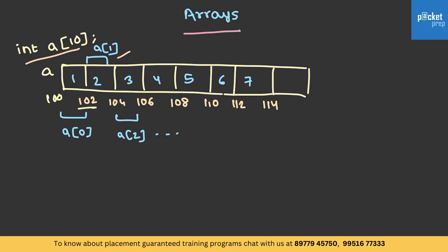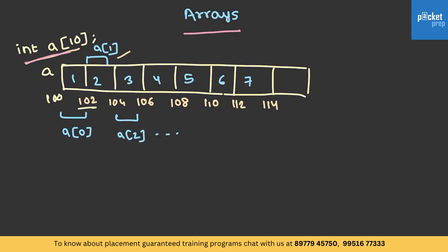Let's take an array for example. I have declared an integer array of size 10. We know that array indexing starts from 0, 1, 2 and so on. If I want to access a specific element — for example this one — it can be accessed with the help of its index. It can be accessed as A of 3.